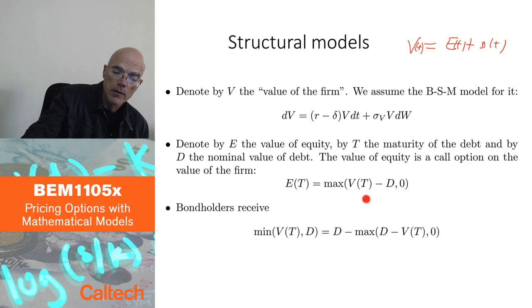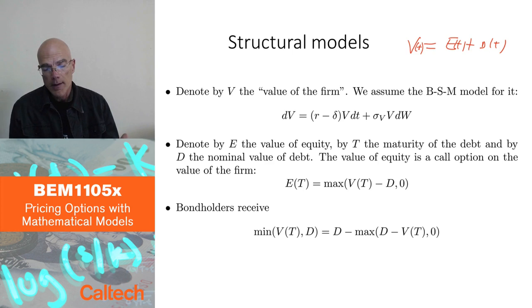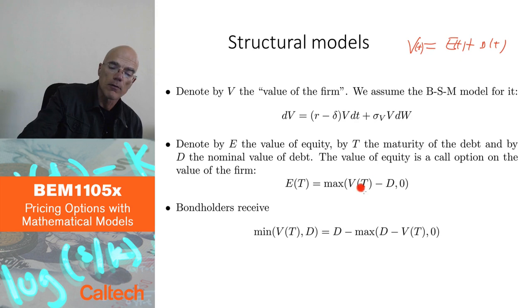On the other hand, so this is the value for the shareholders, the value of the equity at maturity of the debt. If V of capital T is larger than D, then the firm pays the debts to the debt holders, to the bondholders, and then the rest is simply equity from this equation that the value of the firm is equity plus debt. In this regard, now equity, the stock of the firm, is actually an option on the value of the firm. Call option. You can recognize this as a call option on the value of the firm.